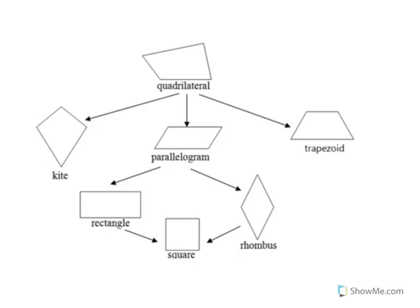What we have here is called a quadrilateral hierarchy, and what this helps us to see is what types of quadrilaterals are actually fitting into the same category as other types of quadrilaterals. As you can see at the very top here, we just have quadrilateral. That just means a shape with four sides.